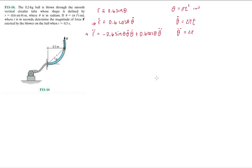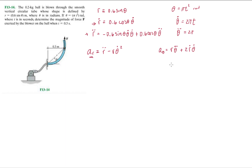Now let's get the radial and transverse acceleration terms in the cylindrical coordinate system. The radial acceleration is r̈ − r θ̇², and the transverse acceleration term is r θ̈ + 2ṙ θ̇.